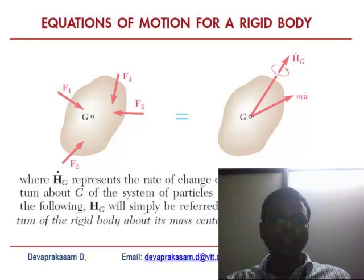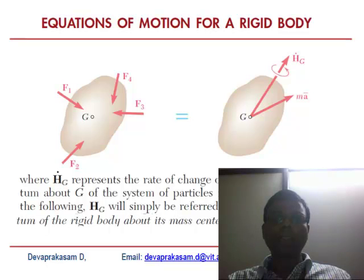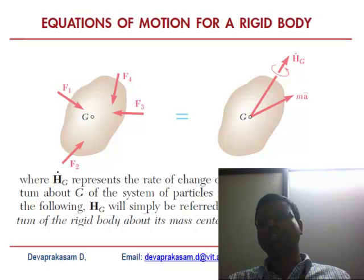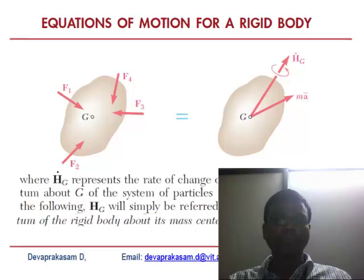In the rigid body, G is the center of mass. F1 or F3 is acting in a plane on the rigid body. You can resolve these forces into a torque about the center of mass and the translational motion of the center of mass — that is M times A, where A is the acceleration of the center of mass, and H-dot is the rate of change of angular momentum about G, which is nothing but the torque. The angular momentum of the rigid body about its mass center — its rate of change equals the torque.